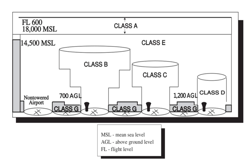No ATC clearance or radio communication is required for VFR flight in Class E airspace. VFR visibility and cloud clearance requirements are the same as for Class C and D airspaces when below 10,000 feet MSL. Above 10,000 feet MSL, the visibility requirement is extended to 5 miles and cloud clearance is extended to 1,000 feet below clouds, 1,000 feet above, and 1 mile laterally.